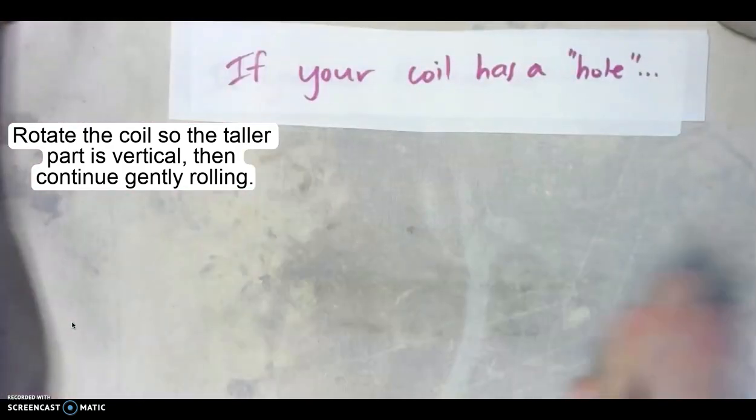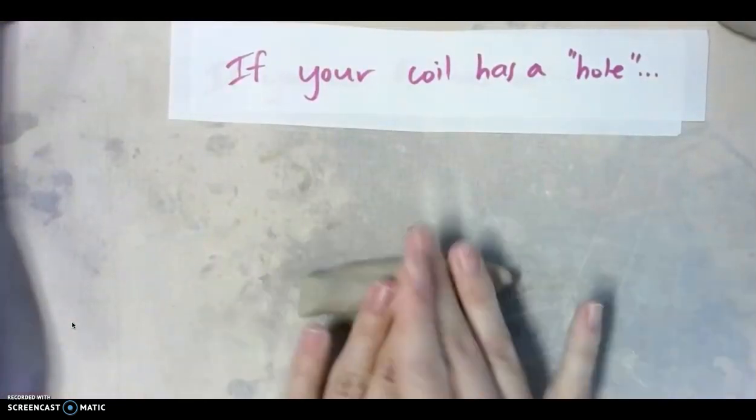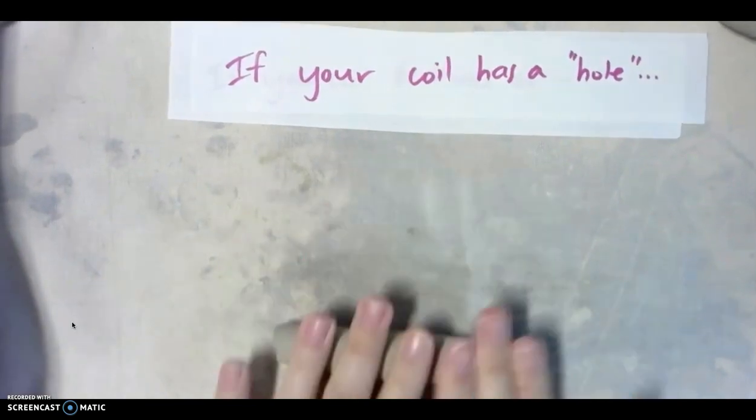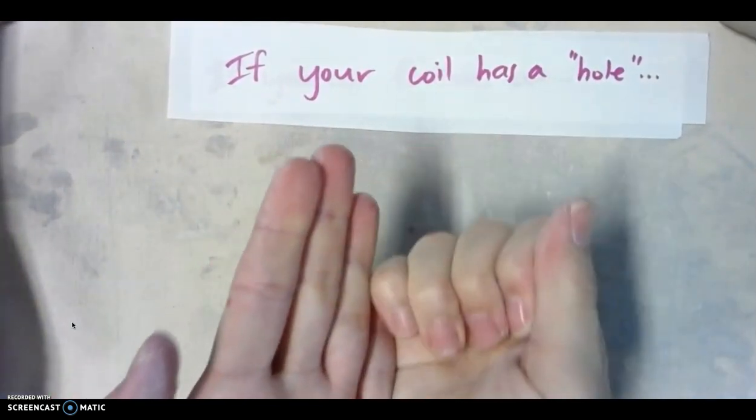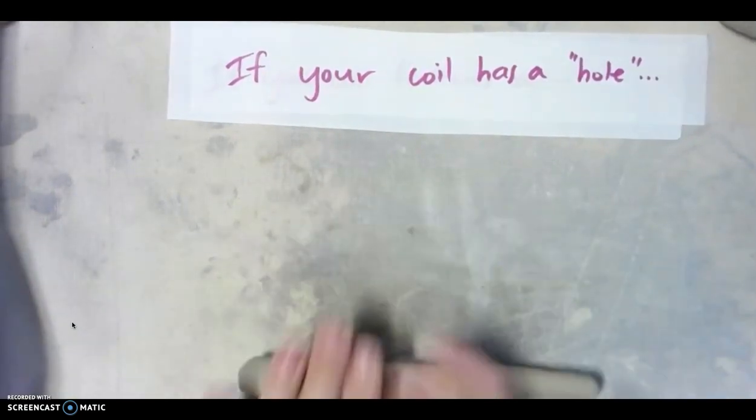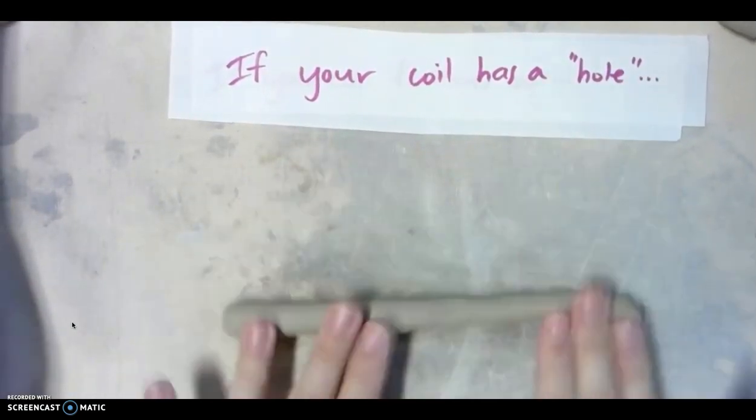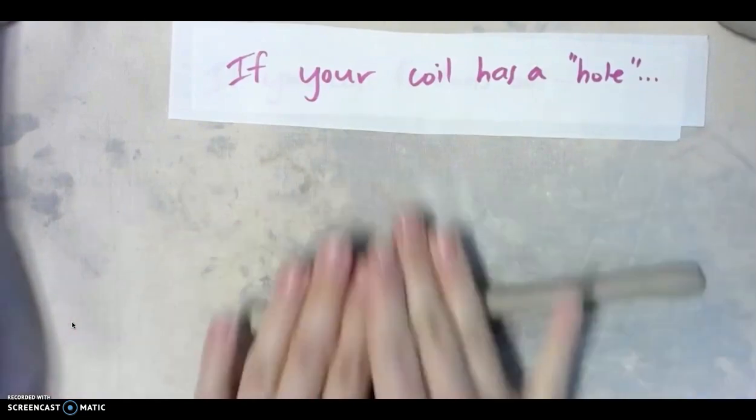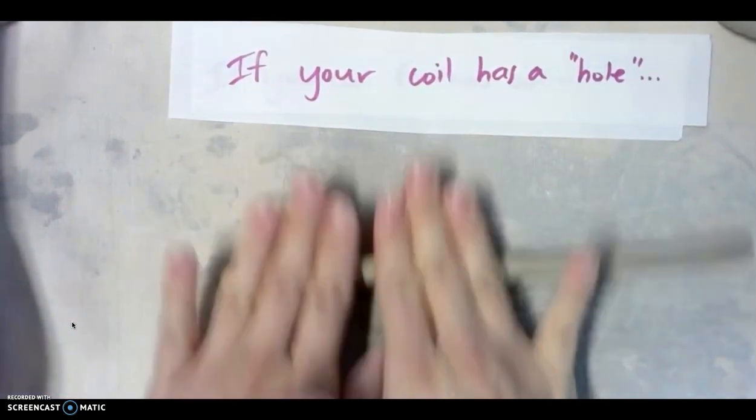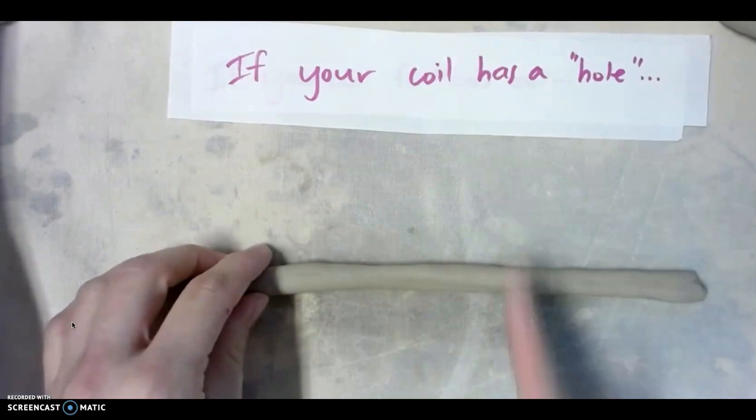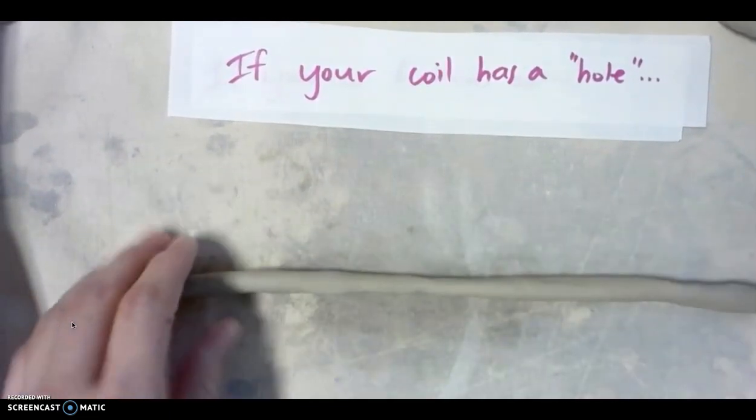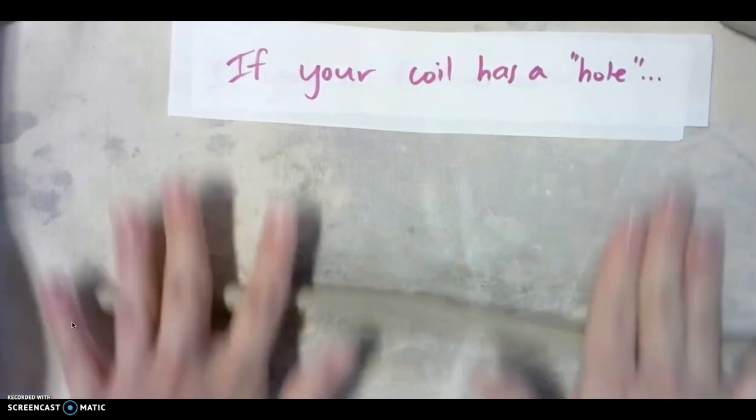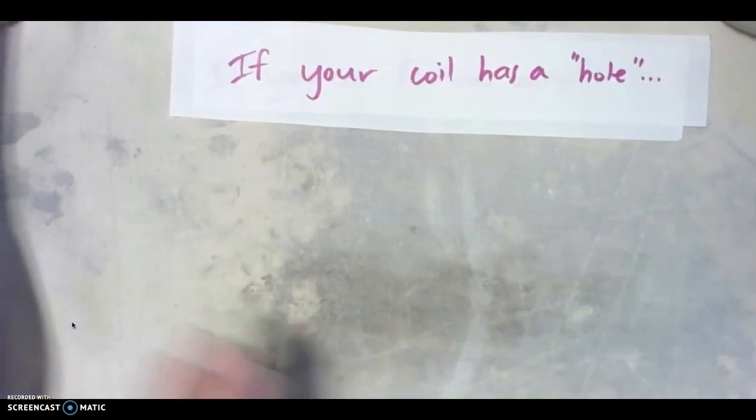Now, sometimes also what happens is the student rolls their coil so quickly it develops a hole. What happens is the clay flattens out and then actually rolls on itself, like it folds on itself. That's not good because then you have literally a hole in your coil, and we don't want to trap any air. So sometimes what you can do is actually take a tool and cut off that area where the hole is, or you might just have to start over, and sometimes that happens. Again, it just takes practice rolling out coils.